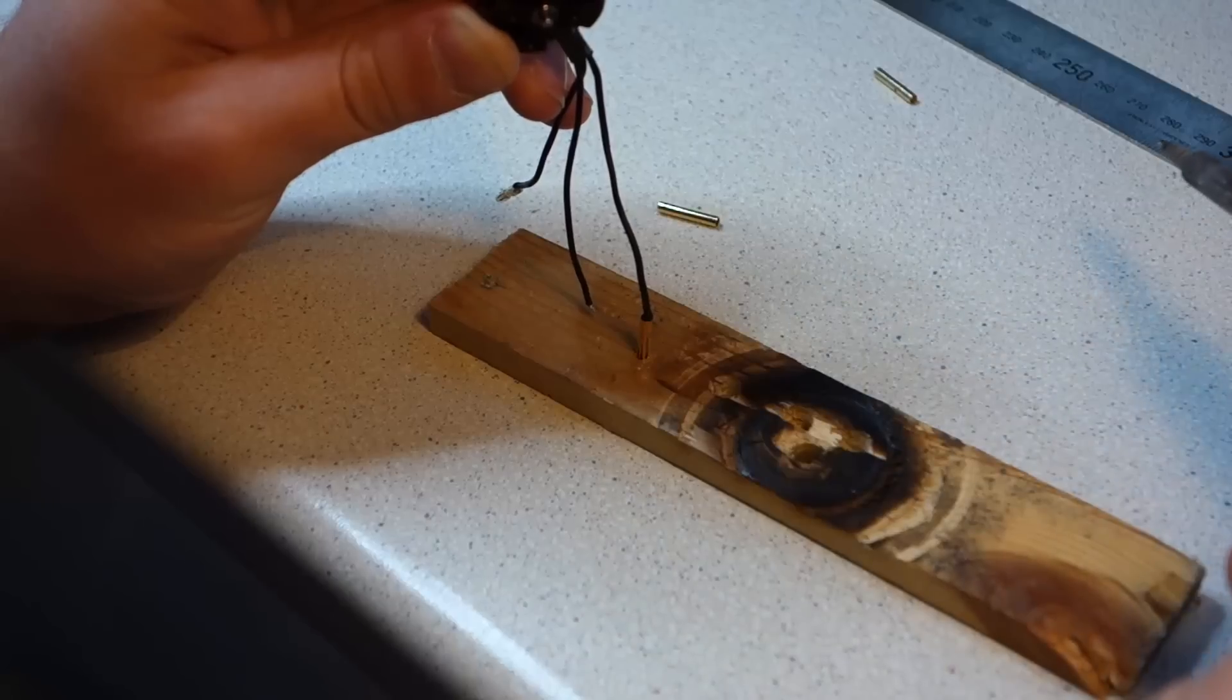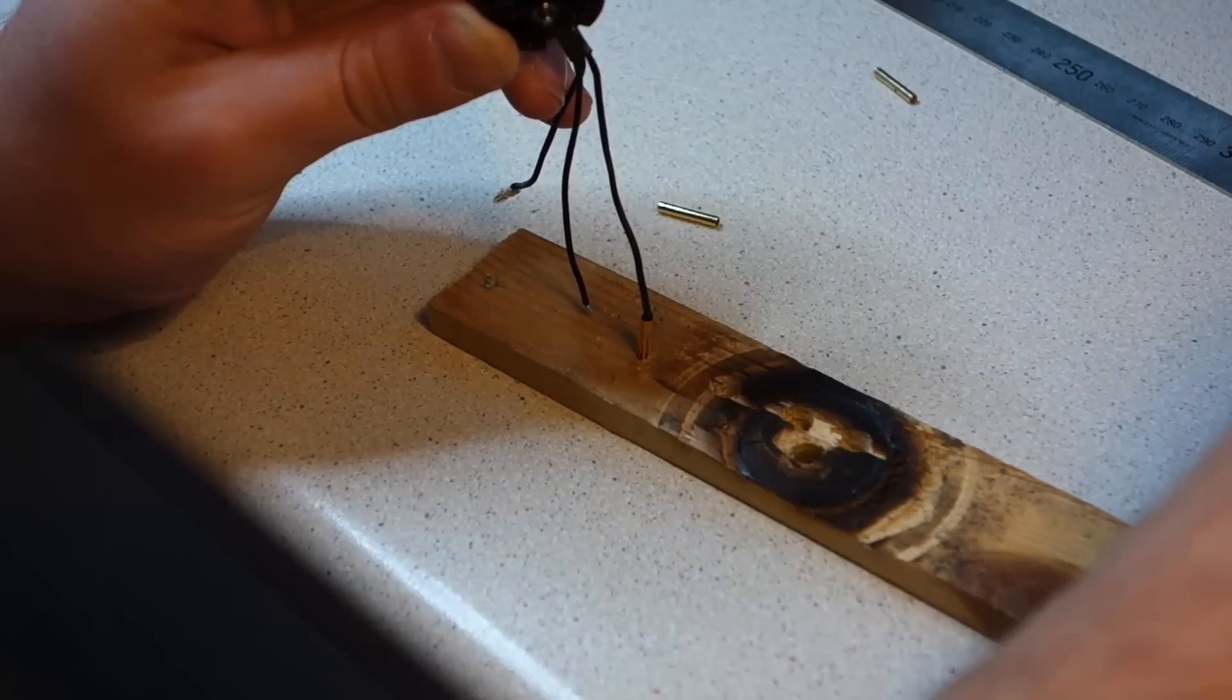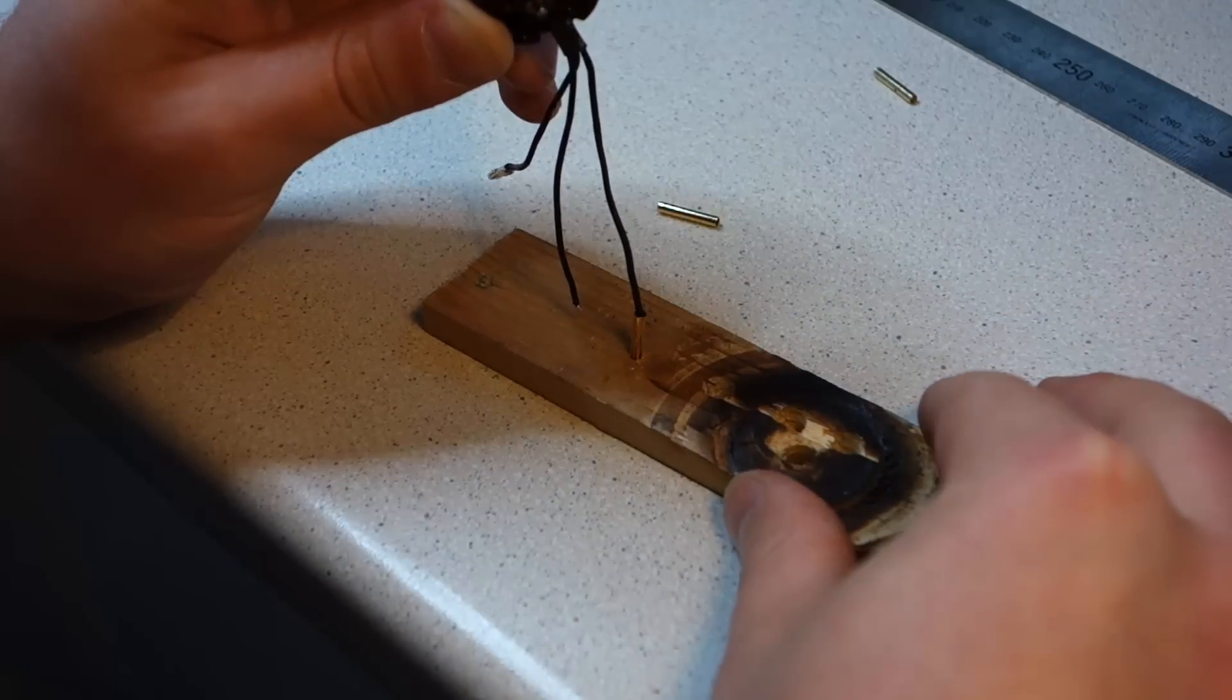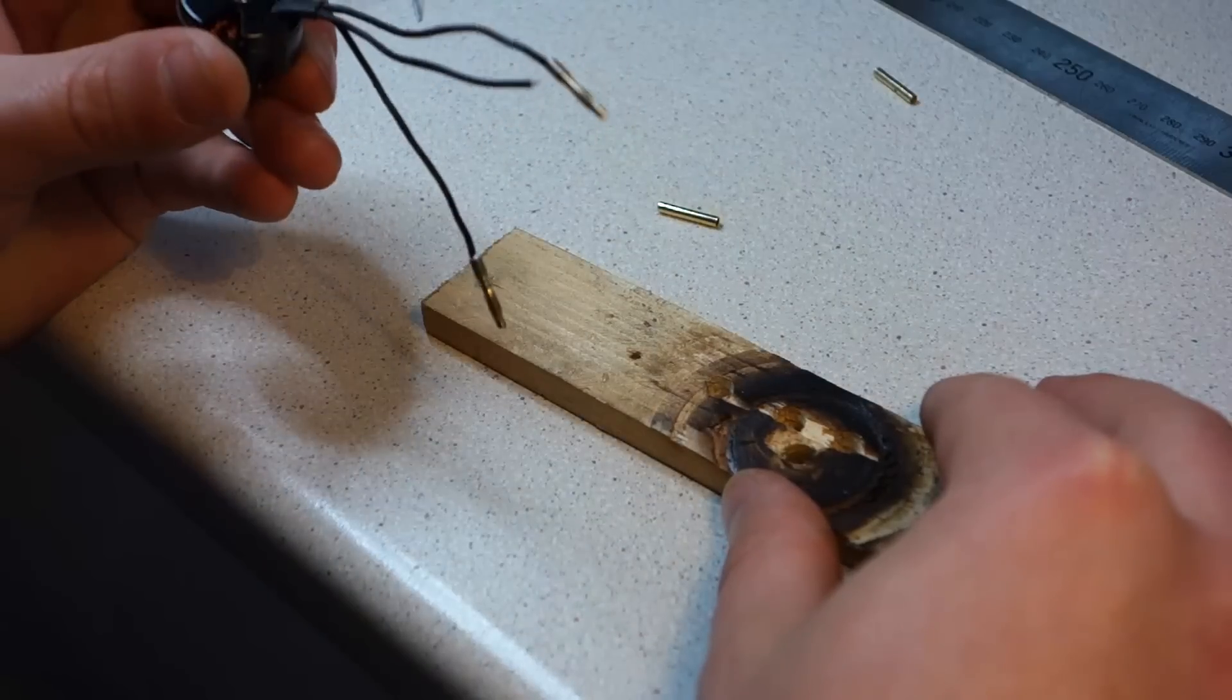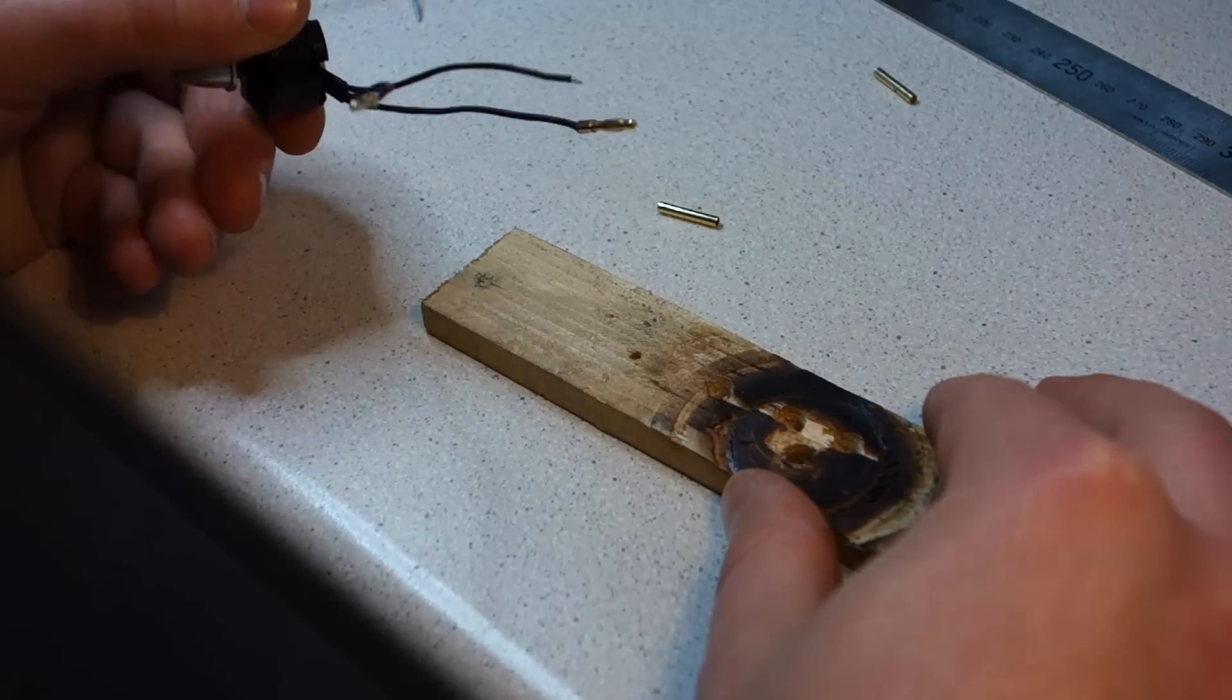Keep the heat on the connector for another couple of seconds to ensure a good soldered joint, keeping the wire as still as you can. It won't take long to cool, so when it has, just check the joint and then we can move on to finishing the connector with heat shrink.